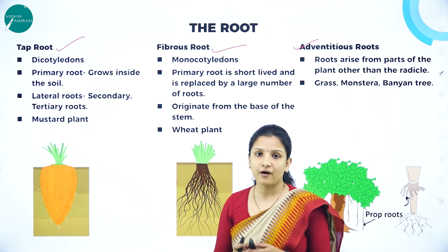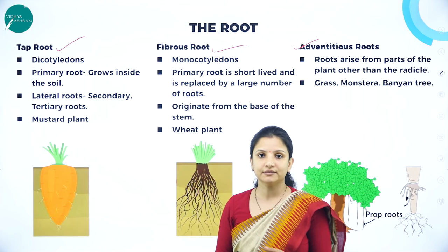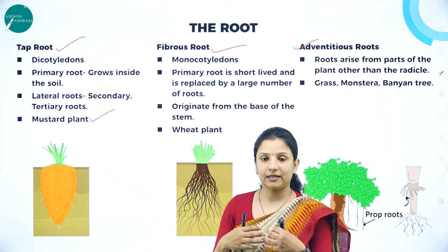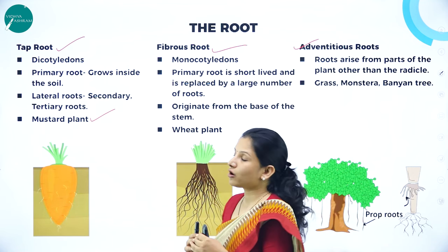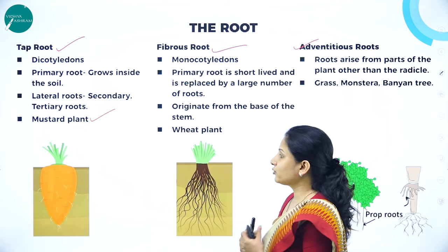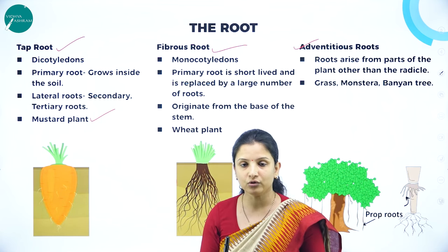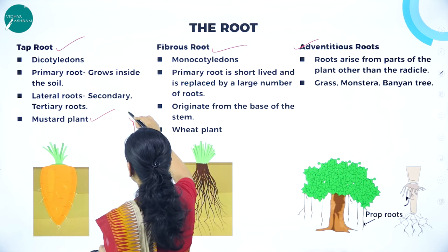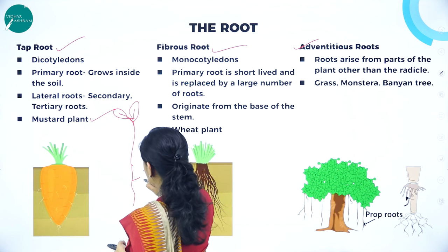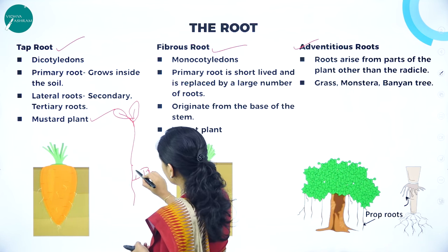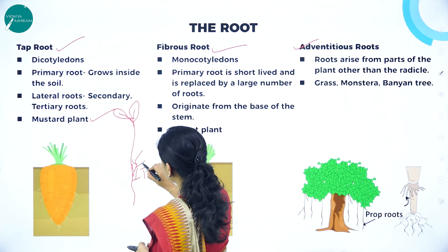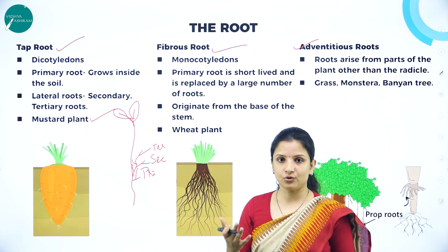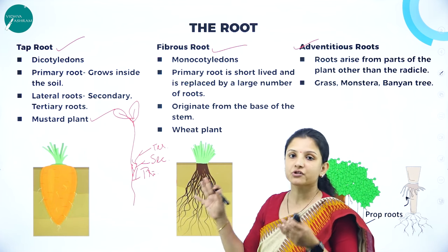Taproot is usually found in dicotyledonous plants. For example, sunflower and mustard plant. In taproot, we have three types of roots: primary root, secondary root, and tertiary root, also called lateral roots. The primary root is the main root, and from that main root all other roots branch out. From the primary root, all these branchings that come up are the lateral roots — secondary, tertiary, and so on. This is called the taproot root system, best seen in the mustard plant.